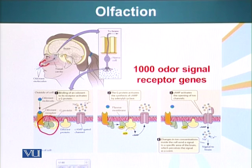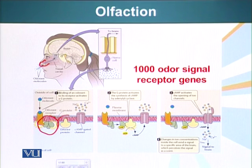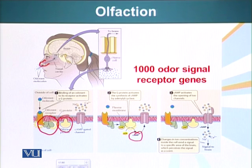The conformational change is recognized by the G protein, which becomes activated. The G protein exchanges GDP for GTP, the alpha subunit dislocates, and binds the effector molecule — adenyl cyclase — which then produces cyclic AMP.